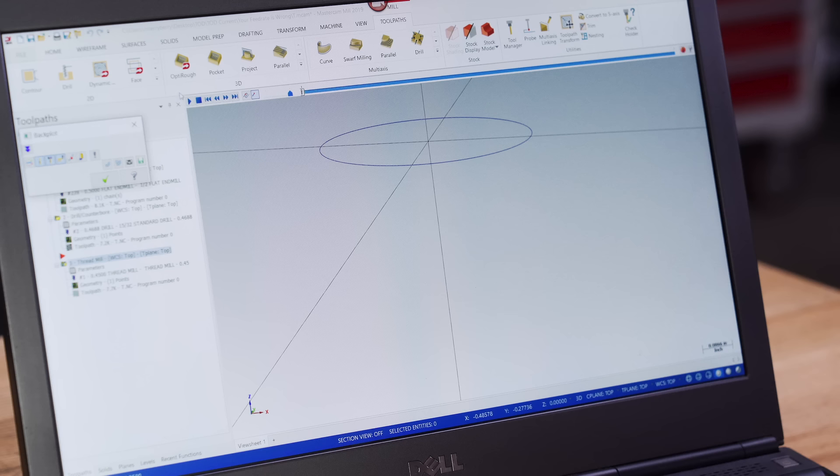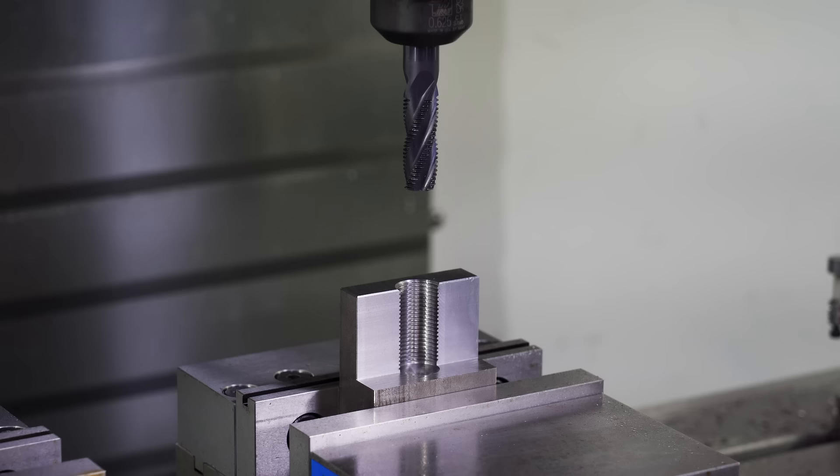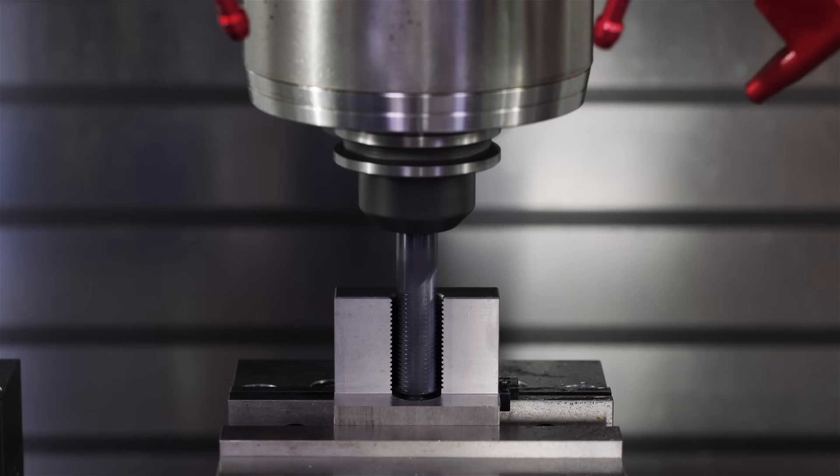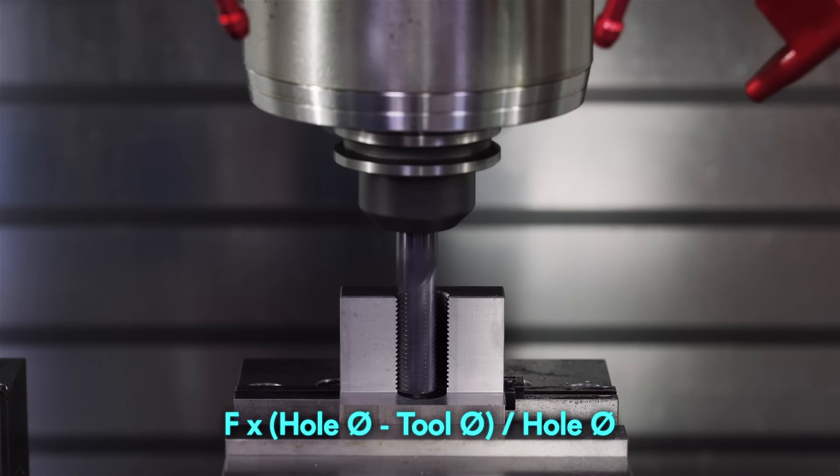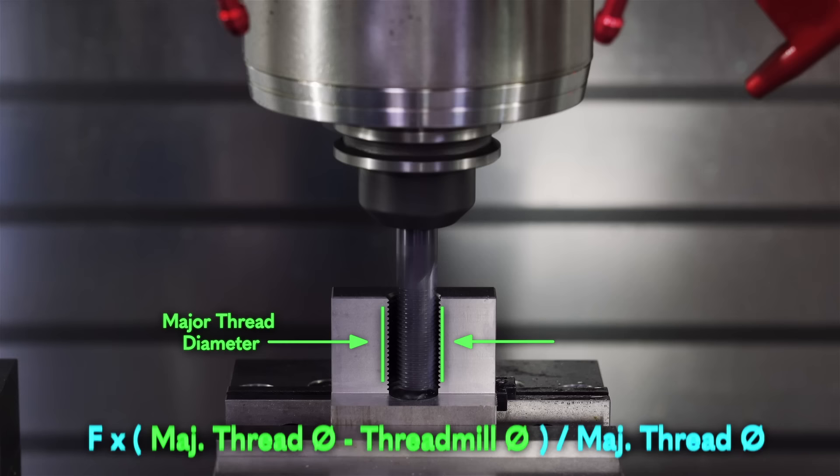We'll see this type of feed rate error all the time when thread milling. When posting our programs from a CAM system, our thread mill is moving much faster at the edge of the tool than it is at the center of the tool. We can use the same formula to adjust our feed rate for thread milling. We just replace our whole diameter with our major thread diameter.